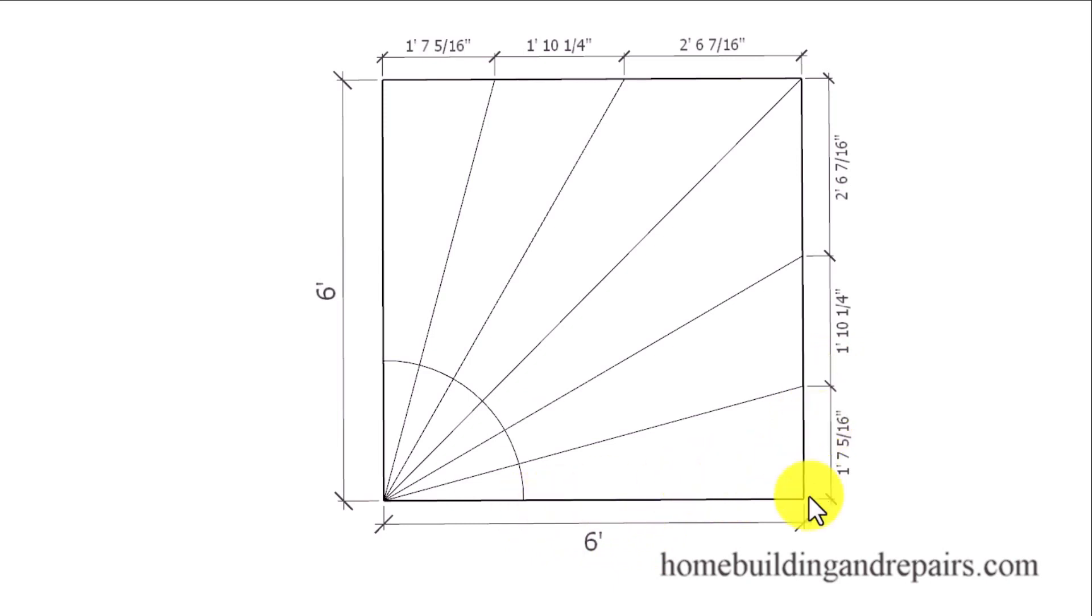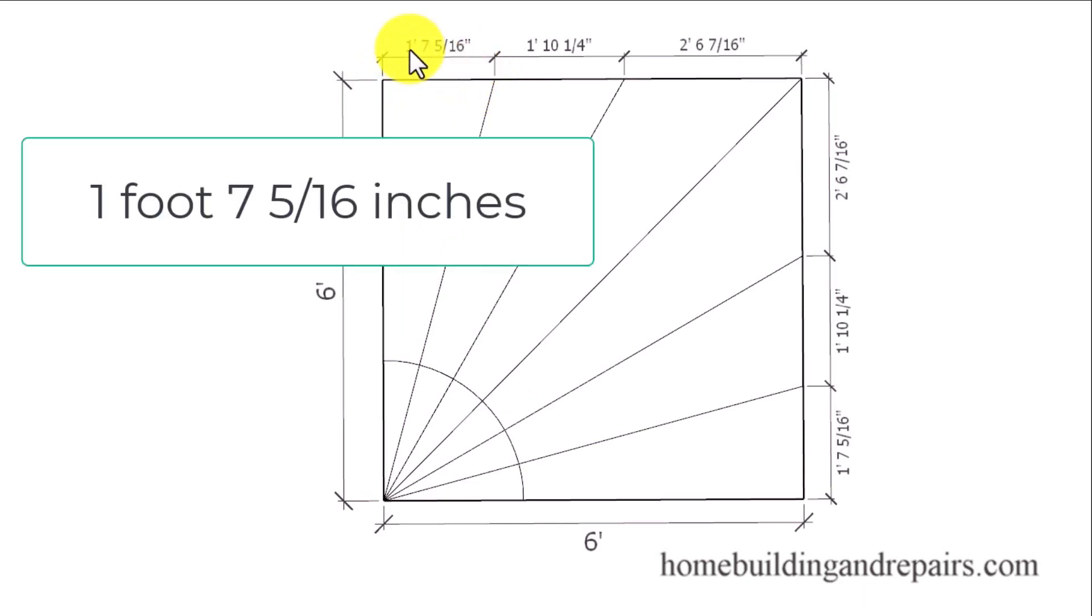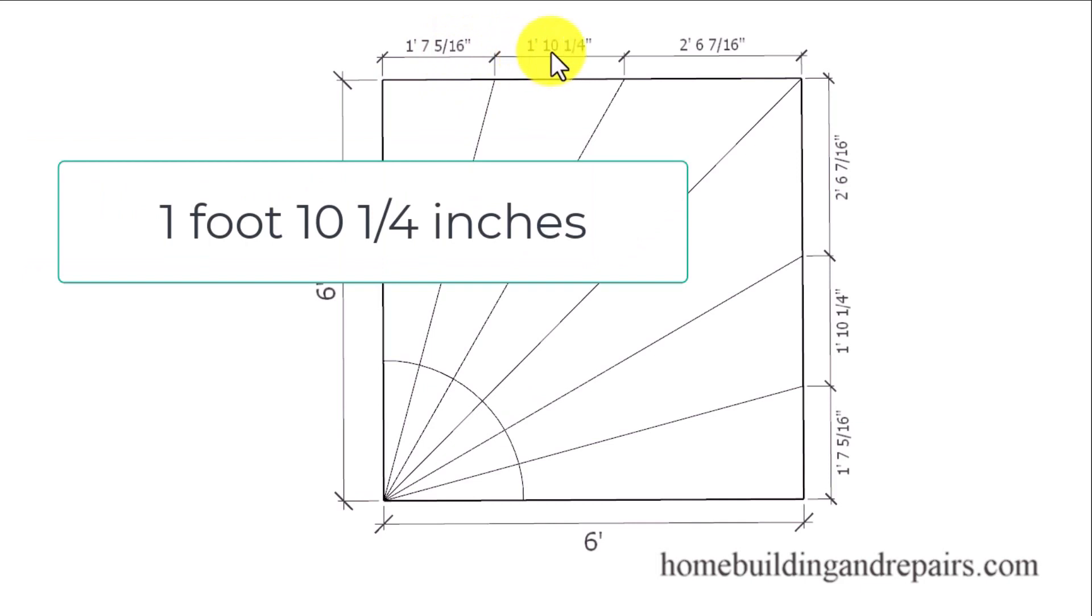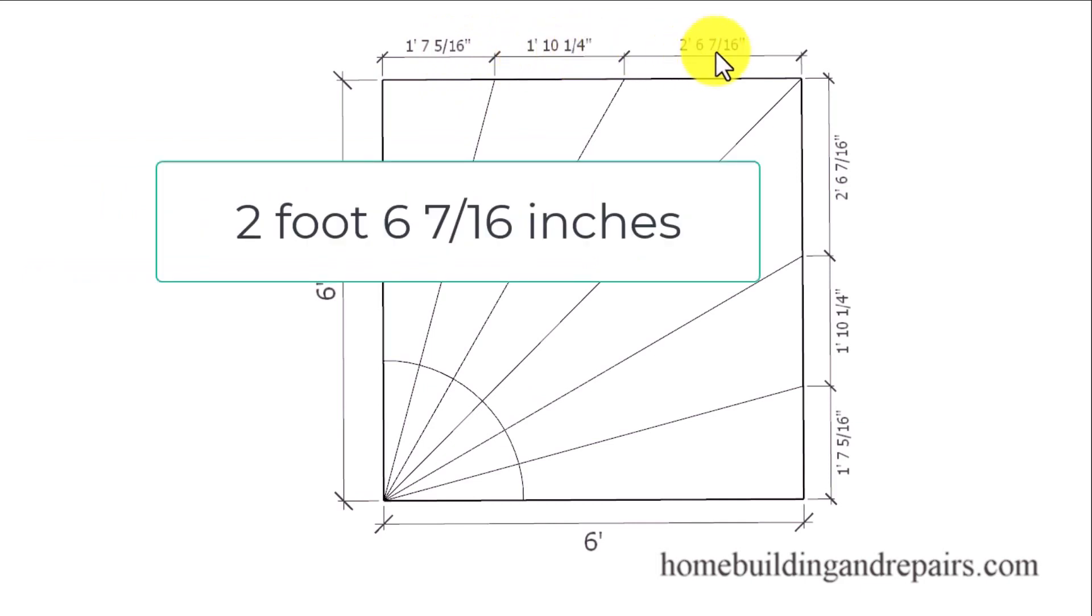If you notice, this measurement here is the same as this one. This measurement here is the same as this one, and this one will be the same as this one. For those of you who cannot see it, this measurement here is one foot seven and five sixteenths inches. This one here is one foot ten and a quarter inches. And this one here is two foot six and seven sixteenths inches.